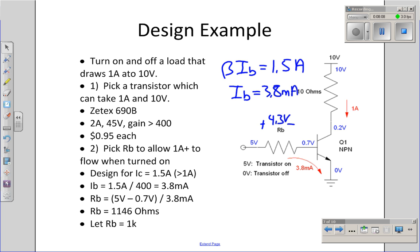Now note that there's a little bit of room for slop. I've picked beta times IB to be 1.5. It doesn't really matter if it's 1.4 or 1.6. It needs to be at least 1. So likewise, you don't really have to make RB exactly 1146 ohms. Make it something close. Say 1K, 1.2K, somewhere in there. By setting RB to 1K, I now have a switch. When the input is 0 volts, the transistor is off. When the input is 5 volts, the transistor is on.